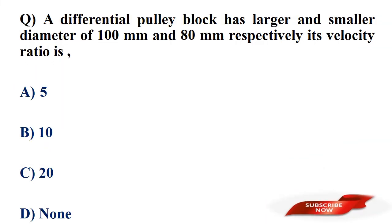A differential pulley block has a larger and smaller diameter of 100 mm and 80 mm respectively. Its velocity ratio is? Options: 5, 10, 20, none of those. Answer: option B, 10.